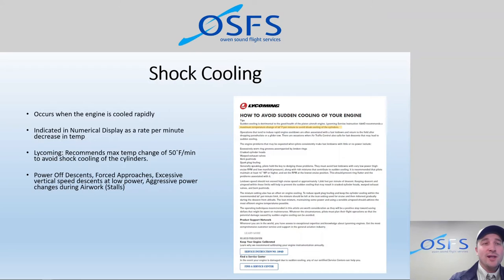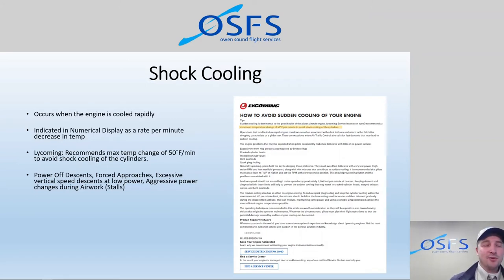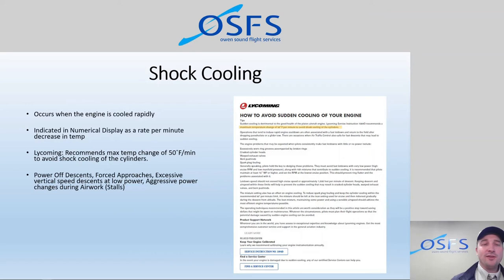Be aware of airwork exercises if you're student training. Things like power off stalls and forced approaches can really cause excessive cooling. In the past, we've developed internal policies on engine failure practice in winter versus summer. In summertime we do forced approach practice with power at idle, gliding down to a field. On the way down, we do engine clearing and warming procedures every 500 feet, bringing the power back up to full or high cruise power and then back to idle again. That helps keep things warm and clean, and we've always said it can help prevent excessive cooling.